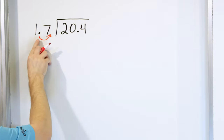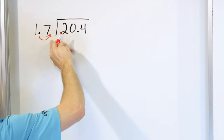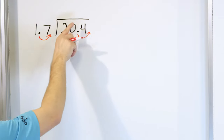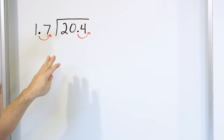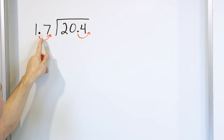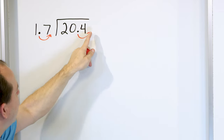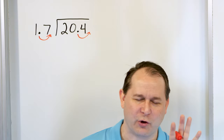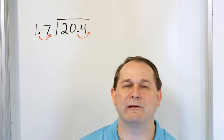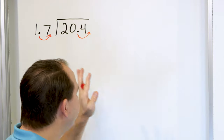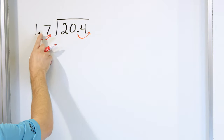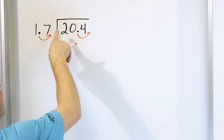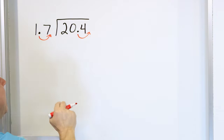So what we want to do is take this decimal point and move it over. But if we move the decimal one position to the right on the outside, then we must also move what is under the division symbol one spot as well. So we move the decimal one spot this way and then one spot that way. You might ask why we're allowed to move decimals — just hold your questions. For now, just know that we want a whole number out here.